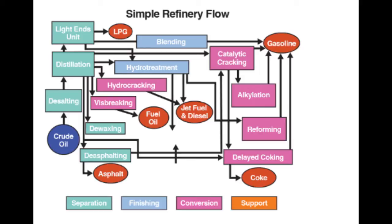Starting from the left, hydro-cracking treats the heavy vacuum gas oil to make additional jet fuel and diesel. Vis-breaking takes the VDR from the vacuum distillation process and produces fuel oil. Moving to the right, catalytic cracking takes feed from the distillation unit — either light gas oil or heavy gas oil — to produce gasoline; this is the major gasoline production path. Byproducts from cat cracking go through alkylation to make additional high-octane gasoline.